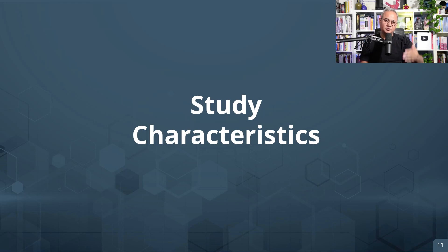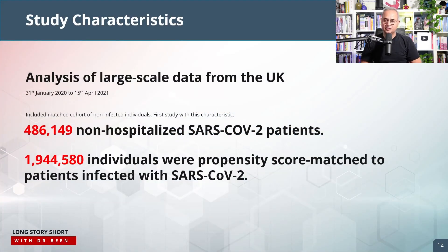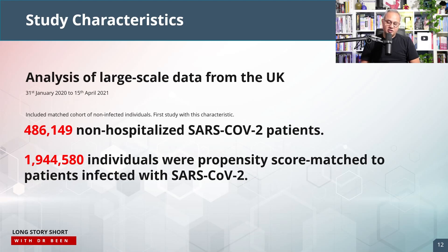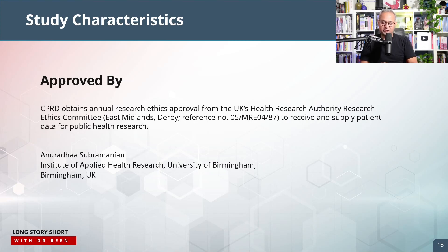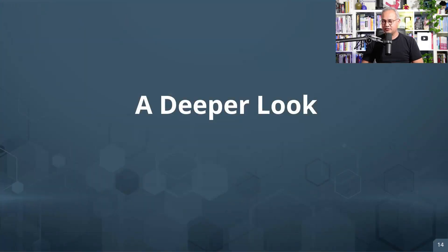Regarding study characteristics: this is an analysis of pre-existing UK database data, not a prospective study. The study period ran from January 31, 2020 to April 15, 2021 — essentially before Omicron. It included 486,149 non-hospitalized confirmed COVID-positive patients, matched against approximately 1.94 million healthy comparators. About half had received at least one vaccine dose. The study was approved by CPRD and the UK Health Research Authority, conducted by the University of Birmingham.